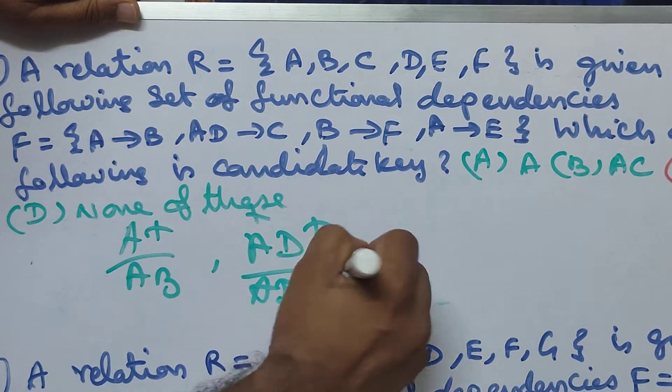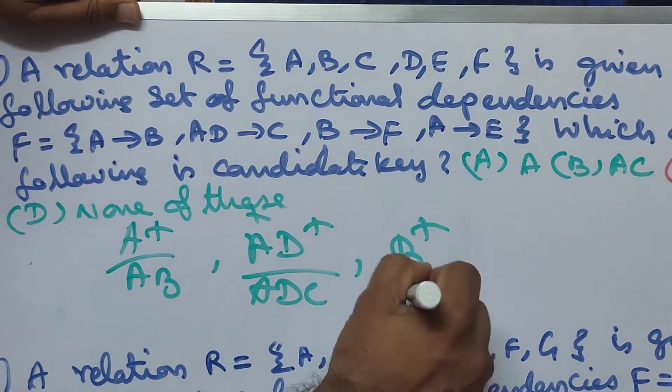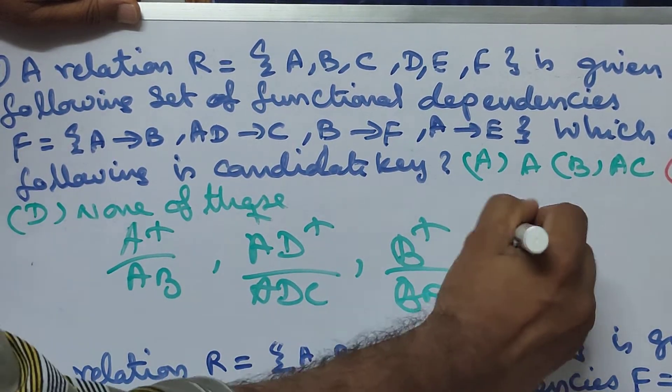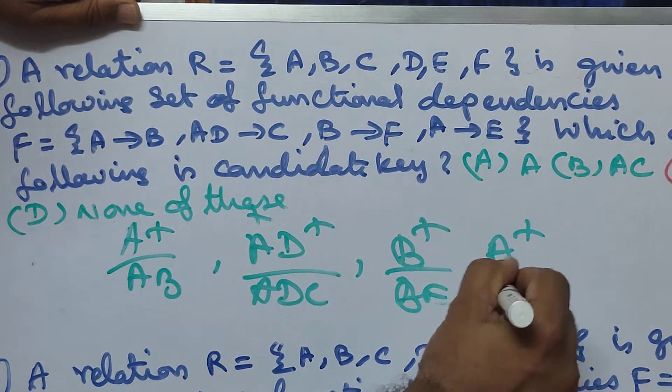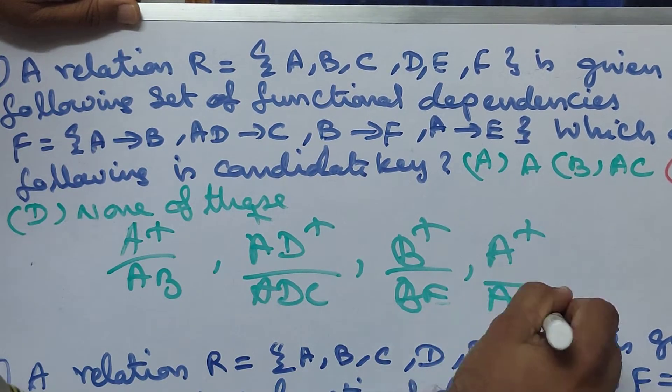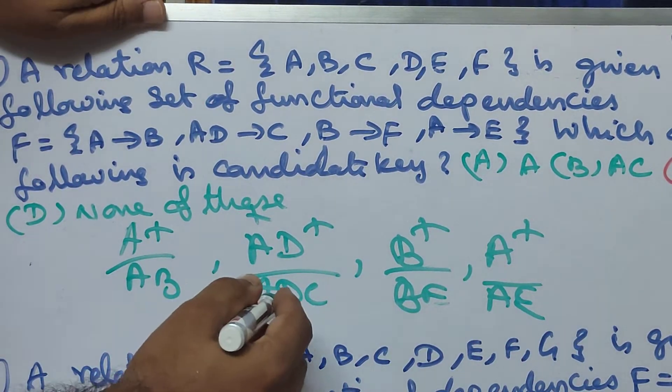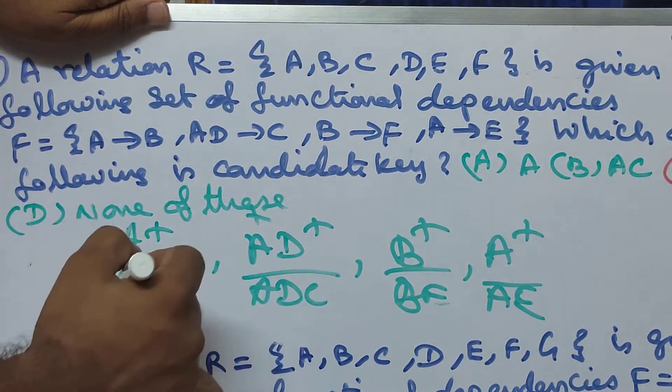B implies F, so closure of B gives B, F. Closure of A gives A, E. AD closure gives A, D, C. Closure of A gives A, B.